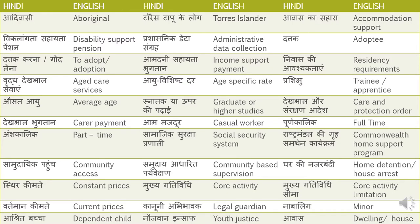Viklangta sahaita pension — that is Disability Support Pension. Viklangta means disability, and pension can be translated as pension itself. Prashasnik data sangra — that is Administrative Data Collection. You can translate 'data' as data — that's not a problem, because it is a scientific or technical word, and the NAATI website says words in this context can be used in the same language. Collection means sangra, prashasnik is administrative.